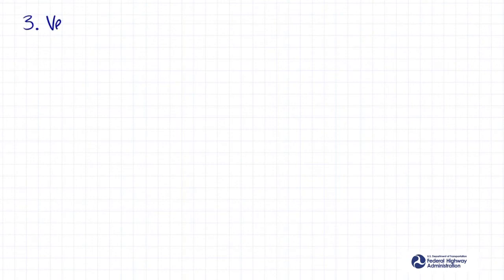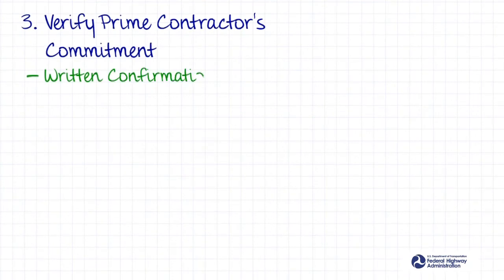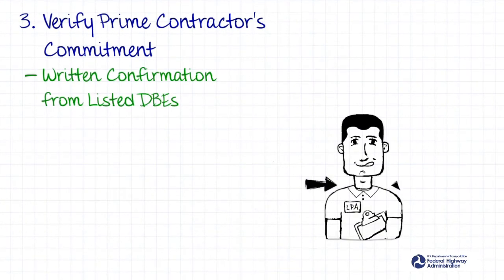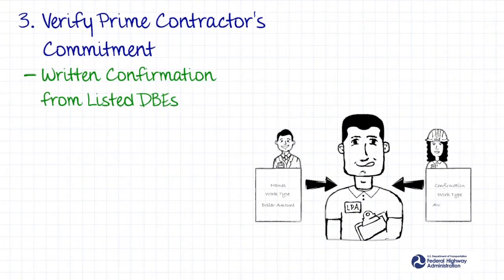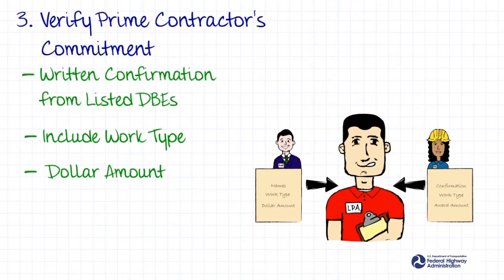You must verify the prime contractor's commitment to the DBE firms. To do this, obtain a written confirmation of the commitment from the listed DBEs to ensure the information obtained from the prime contractor is accurate. This written confirmation must identify the name of the DBE, the type of work the DBE will perform, and the subcontract award amount the DBE is expected to receive.